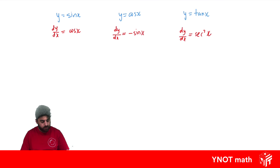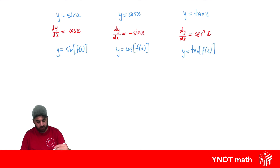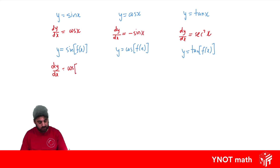But often we're just not differentiating these functions on their own. Usually inside x we have a function of x. So let's write more generic formulas we can use. If we have y equals sine of a function of x, the derivative — normally the derivative of sine is cos, so that doesn't change — it'll just be the cos of that function, multiplied by the derivative of that function.